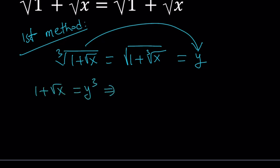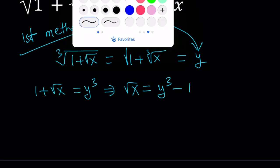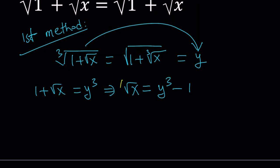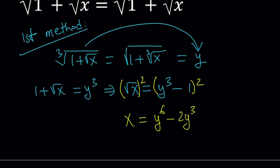Let's go ahead and isolate square root of x. Square root of x becomes y cubed minus 1. Now we want to get rid of all the radicals, so let's go ahead and square both sides. When we square both sides, we're going to get x equals y to the 6 minus 2y cubed plus 1. So that is the x value.